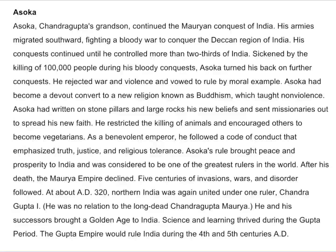Ashoka, Chandragupta's grandson, continued the Mauryan conquest of India. His armies migrated southward, fighting a bloody war to conquer the Dekan region of India. His conquests continued until he controlled more than two-thirds of India. Sickened by the killing of 100,000 people during his bloody conquest, Ashoka turned his back on further conquests. He rejected war and violence and vowed to rule by moral example. Ashoka had become a devout convert to a new religion known as Buddhism, which taught non-violence. Ashoka had his new beliefs written on stone pillars and large rocks, and sent missionaries out to spread his new faith. He restricted the killing of animals and encouraged others to become vegetarians. As a benevolent emperor, he followed a code of conduct that emphasized truth, justice, and religious tolerance. Ashoka's rule brought peace and prosperity to India and he was considered to be one of the greatest rulers in the world.